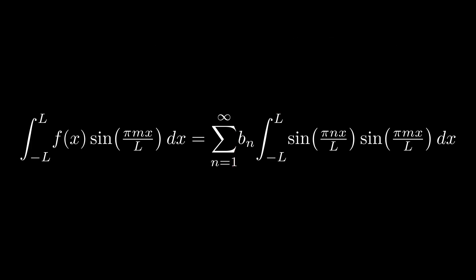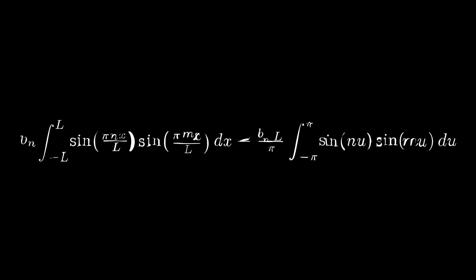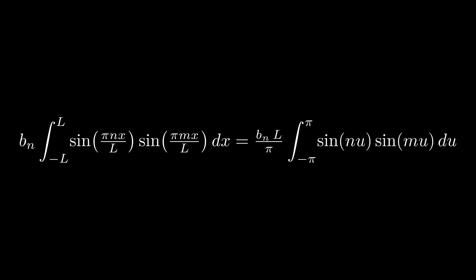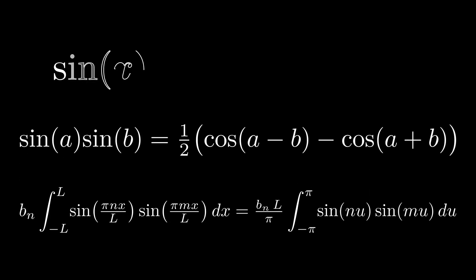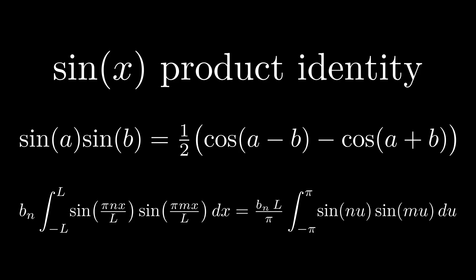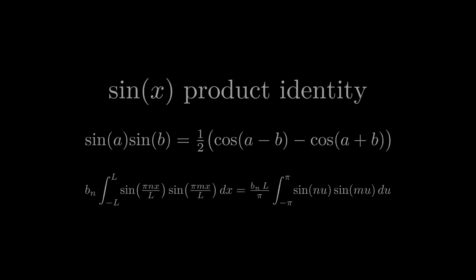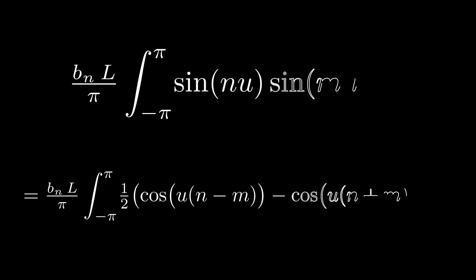Let's use u substitution to make things simpler. Notice that our integrand is vulnerable to a trigonometric identity, in particular this one. The product of sine of a and sine of b is equal to cosine of a minus b minus cosine of a plus b, all times one half. Substituting this expression in our integrand, we end up with this.